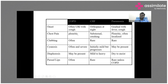Chest pain in pneumonia is pleuritic type, meaning the pain increases on deep inspiration or coughing. In CHF, it may be substernal or crushing, increasing with walking — that is cardiogenic chest pain. Pneumonia can also have pleuritic chest pain if it involves the pleura, and it is localized.